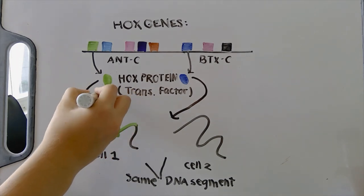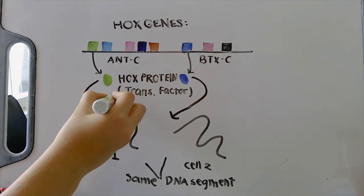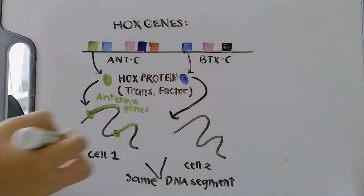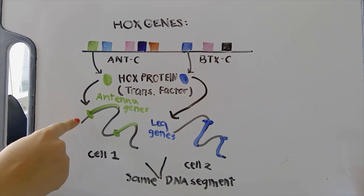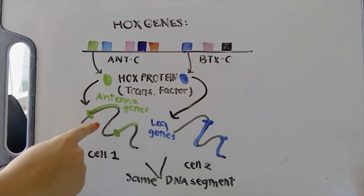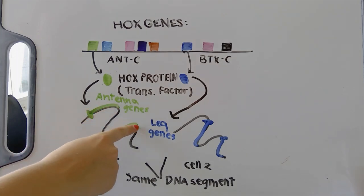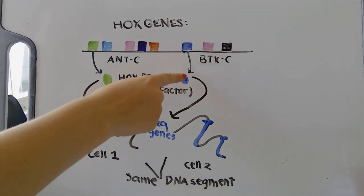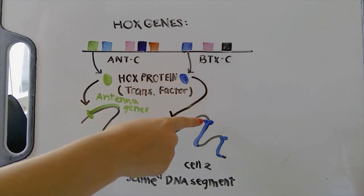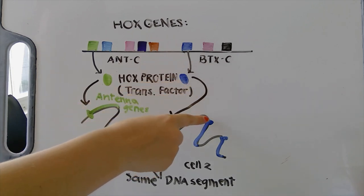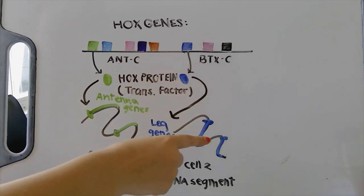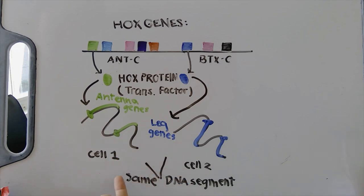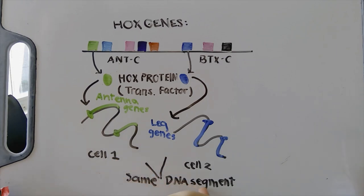So, here we see that in the first case, the binding of Hox proteins initiates the transcription of the green areas in the DNA, which themselves code for antenna-building proteins, while in the next case, the Hox proteins activate the blue genes, which, when transcribed, will form the legs.